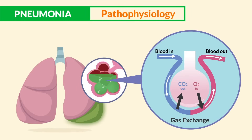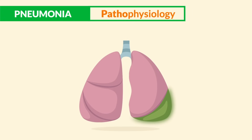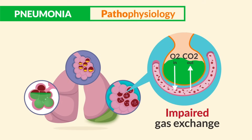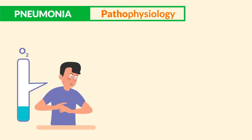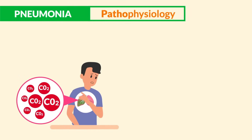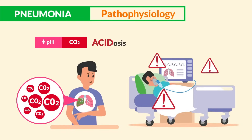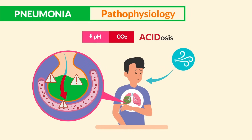The alveoli is the place where gas exchange occurs. Normally we breathe oxygen in and carbon dioxide out. But with pneumonia, all this fluid, mucus, and debris fills the lungs and leads to impaired gas exchange where CO2 can't get out and oxygen can't get in. This results in hypoxia from low oxygen and acidosis from too much CO2 — think 'carbon diacid' — and impaired ventilation as the body tries desperately to get air through those fluid mucus-filled alveoli.